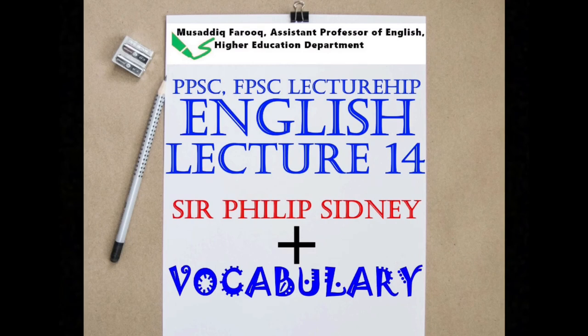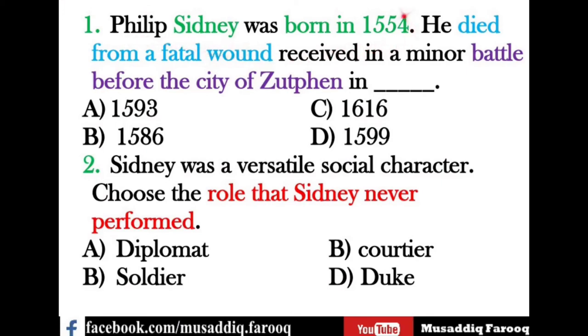Question one: Philip Sidney was born in 1554 and died from a fatal wound received in a minor battle before the city of Zutphen, in modern-day Netherlands. The year of his death was 1586. The other options — 1593 is the year Christopher Marlowe died, 1616 is when Shakespeare died, and 1599 is when Edmund Spencer died.